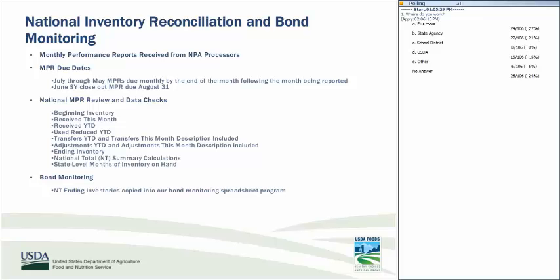The received year-to-date, used/reduced year-to-date, transfers year-to-date, and adjustments year-to-date quantities are verified against prior month year-to-date quantities plus current month quantities. The report and email are also checked to verify brief descriptions of current month transfers and adjustments have been included. Ending inventory quantities are verified to ensure the total of beginning inventory plus received this month, minus used/reduced this month, plus transfers and adjustments this month are correct. The national total summary calculations are cross-checked against state data to ensure all state data is included.